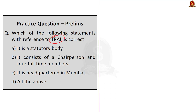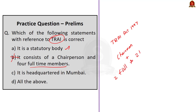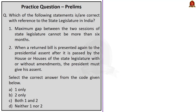Question 2 is about TRAI. TRAI is established by the TRAI Act of 1997, so it is a statutory body — option A is correct. Option B says TRAI consists of a chairman and four full-time members — this is wrong, as TRAI consists of a chairman, two full-time members, and two part-time members. Option C says TRAI is headquartered in Mumbai — actually TRAI is headquartered in New Delhi. So the correct answer is option A — it is a statutory body.